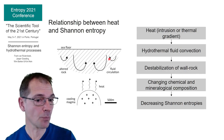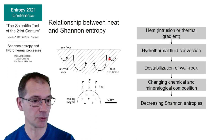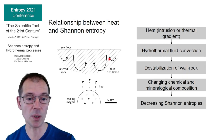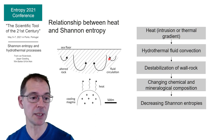When we consider the hydrothermal system with the heat source and fluid convection in which the hydrothermal alteration occurred, we can observe the following relationship between heat and the Shannon entropies. Heat drives the hydrothermal fluid convection, which causes destabilization of wall rock. This leads to a change in chemical and mineralogical composition and ultimately to decreasing Shannon entropies.